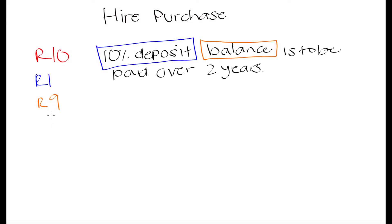The balance is going to be R9, because R10 minus R1 is R9. So you are going to have to pay off that R9 over a period of 2 years. The caveat with hire purchase agreements is that in addition to paying the total cost of the item, you are also going to have to pay interest on that balance. Whenever you see a problem dealing with hire purchase agreements or hire purchase loans, you know that you are going to need to use the simple interest formula.